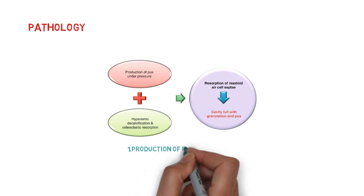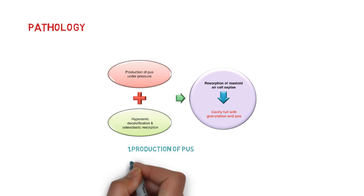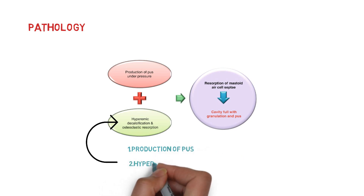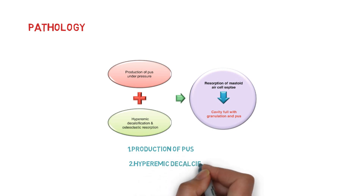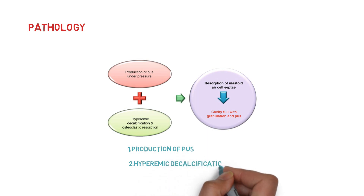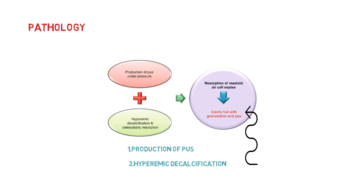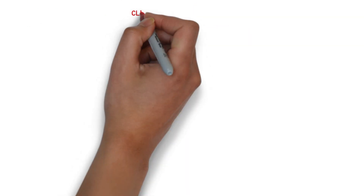Another process is hyperemic decalcification and osteoclastic reabsorption of the bony walls. Both these processes combine to cause destruction and coalescence of the mastoid air cells, converting them into a single irregular cavity filled with pus — that is, empyema of the mastoid.